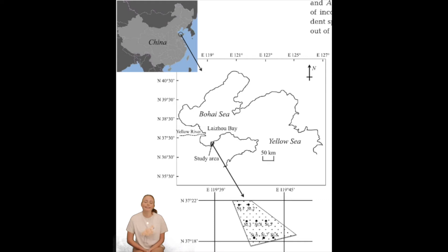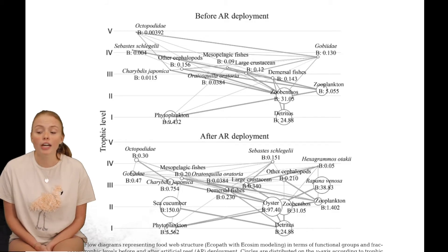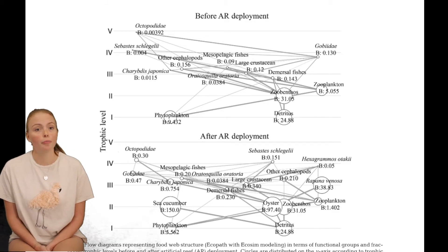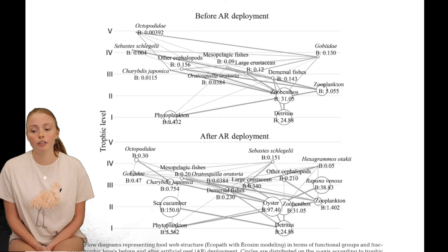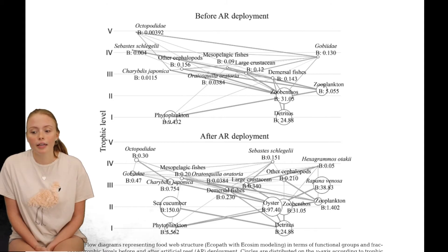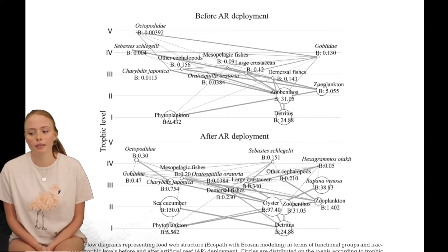A case study looking at the before and after ecosystems of an artificial oyster reef deployed in Lai Zao Bay in China used EcoPath modelling to look at the trophic interactions, energy flows, keystone species, ecosystem properties and the fishing impacts.